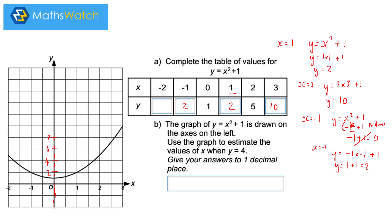Let's do x equals minus 2. That means y equals minus 2 times minus 2 plus 1, which becomes 4 plus 1 equals 5. Put the 5 in the table — that matches the graph.